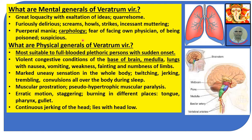What are the physical generals of Veratrum Viride? Most suitable to full-blooded, plethoric persons with sudden onset. Violent congestive conditions of the base of the brain, medulla, and lungs with nausea, vomiting, weakness, fainting, and numbness of limbs. Marked uneasy sensation in the whole body, twitching, jerking, trembling, convulsions all over the body during sleep, muscular prostration, pseudo-hypertrophic muscular paralysis.